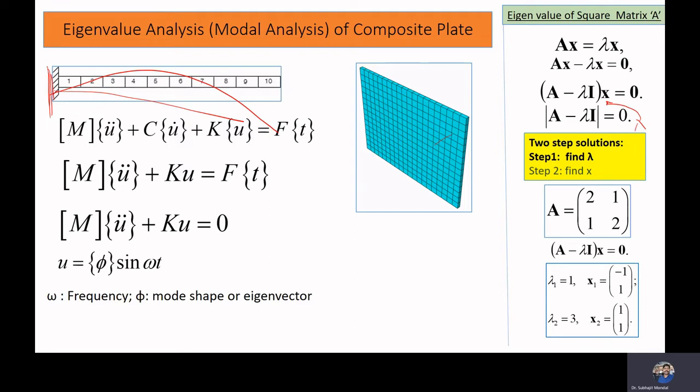For the first mode shape, the structure needs to spend the least amount of energy to bend. Higher modes require higher energy to bend. So basically, the eigenvector is the mode shape, and the first mode shape is the easiest shape in which a structure can bend.